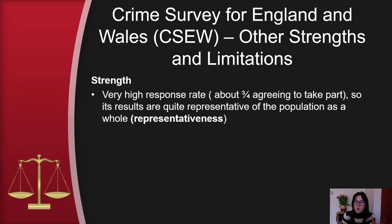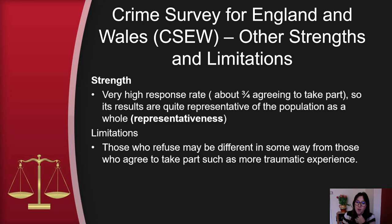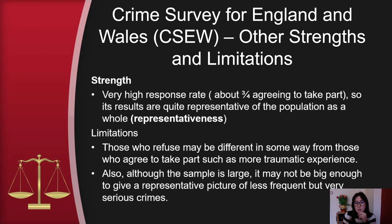Other strengths and limitations: three-quarters of people agree to take part, giving a very high response rate, so the results are quite representative of the population as a whole. However, those who do refuse raise questions — what is it about that quarter who don't participate? Their information would have been very interesting. Also, although the sample is large, it may not be big enough to give a representative picture of the less frequent but very serious crimes.